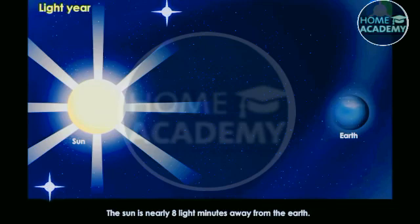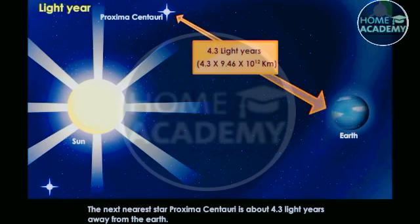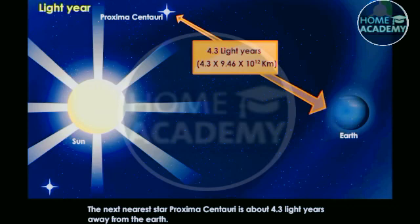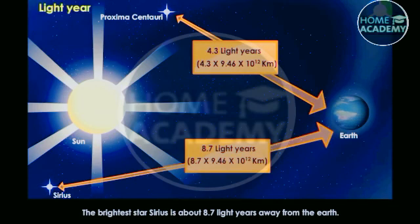The sun is nearly 8 light minutes away from the earth. The next nearest star, Proxima Centauri, is about 4.3 light years away from the earth. The brightest star, Sirius, is about 8.7 light years away from the earth.